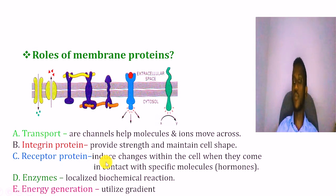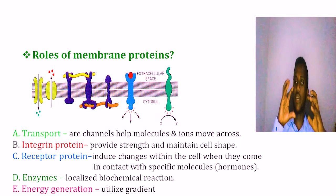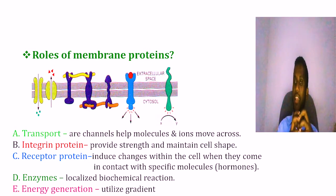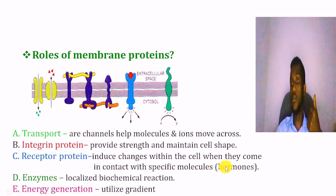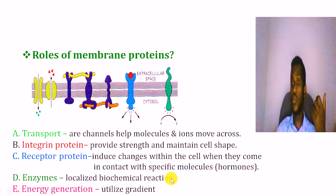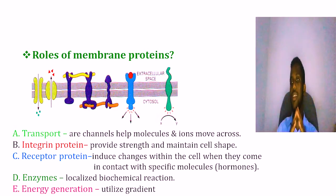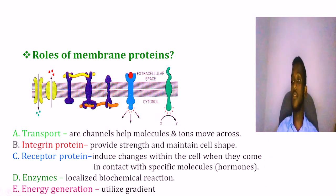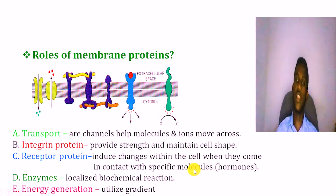There is also receptor protein. When molecules come and bind to this receptor protein, some conformational change will occur. Other proteins act as enzymes — they act as biological catalysts inside the membrane, facilitating chemical reactions. The active transport protein uses energy from the energy gradient.